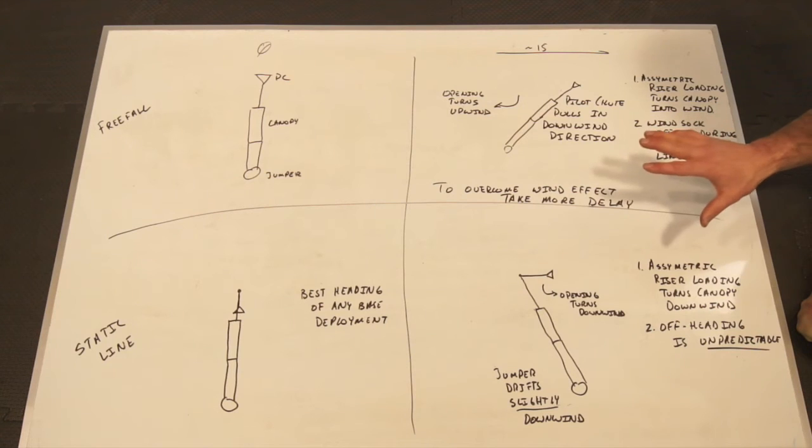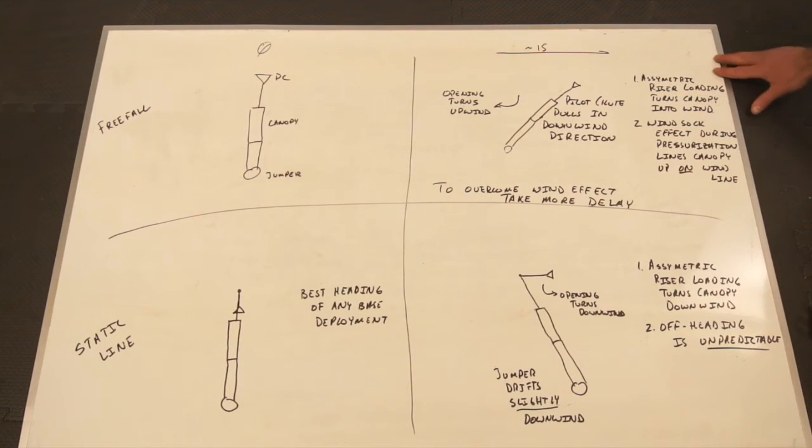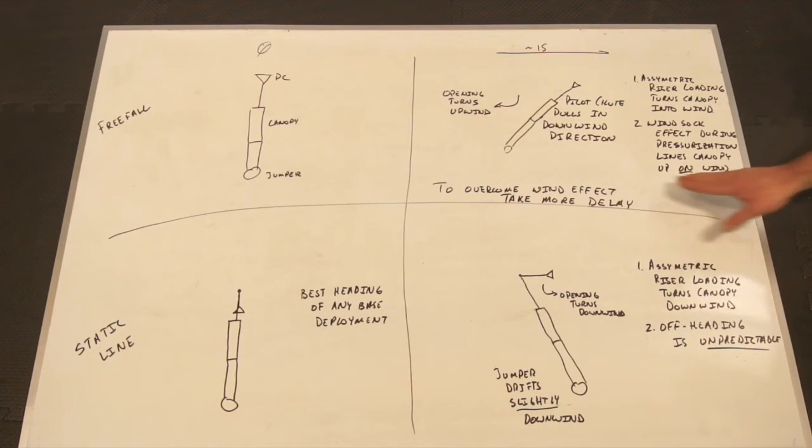That does a couple of important things for our opening. The first thing we see is this asymmetric riser loading. The upwind riser loads first, and that will turn the canopy towards the upwind riser. So our riser loading effect turns the canopy into the wind.